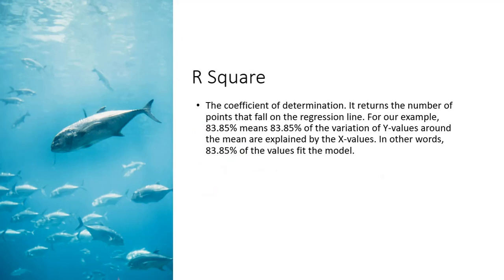The R square is what we call the regression statistic. It is the coefficient of determination. It returns the number of points that fall on the regression line. For our example, it's 83.85%, which means that 83.85% of the variation of Y values around the mean are explained by the X values. In other words, 83.85% of the values fit the model.